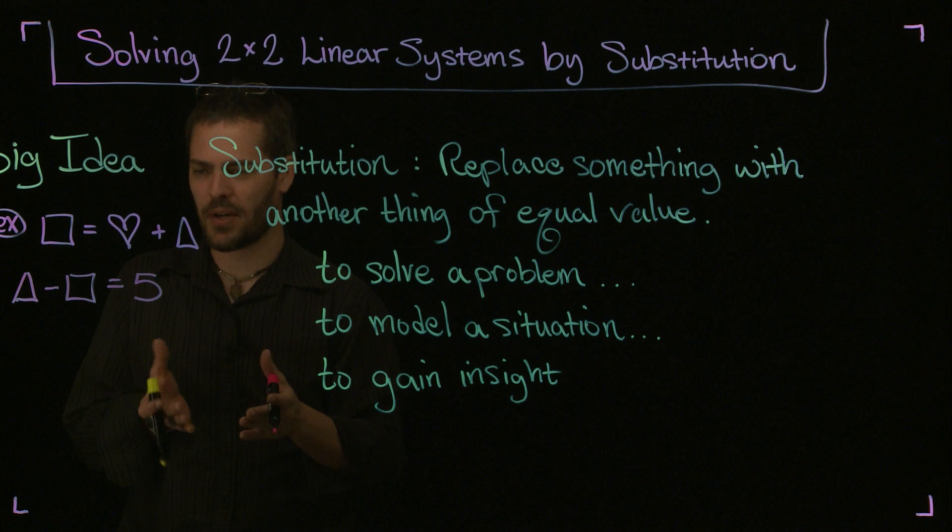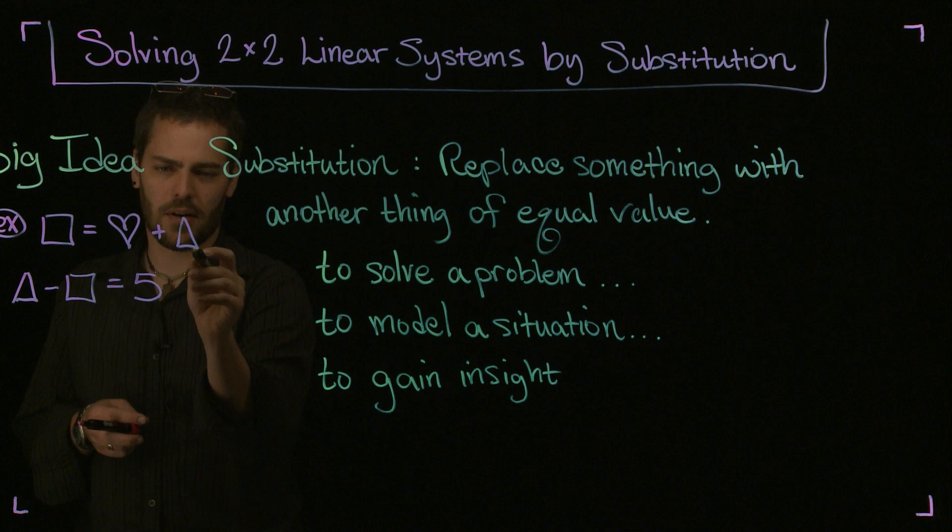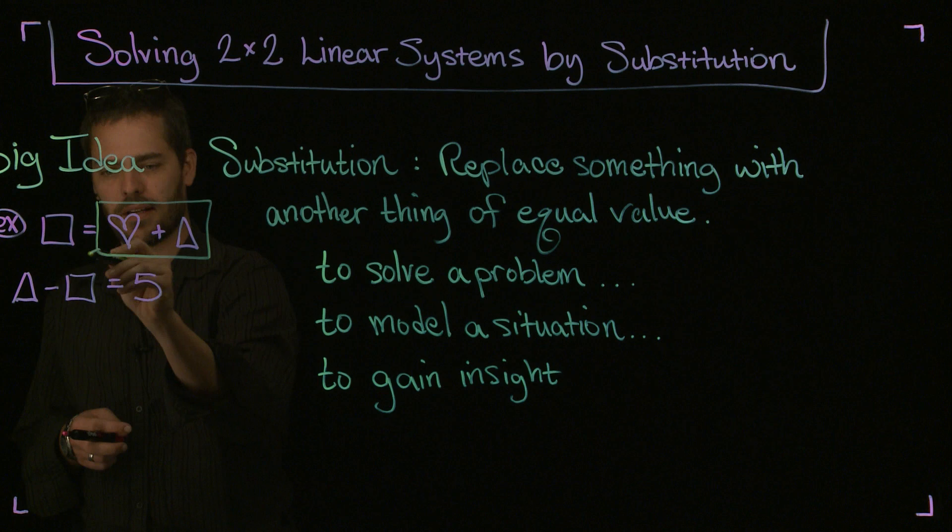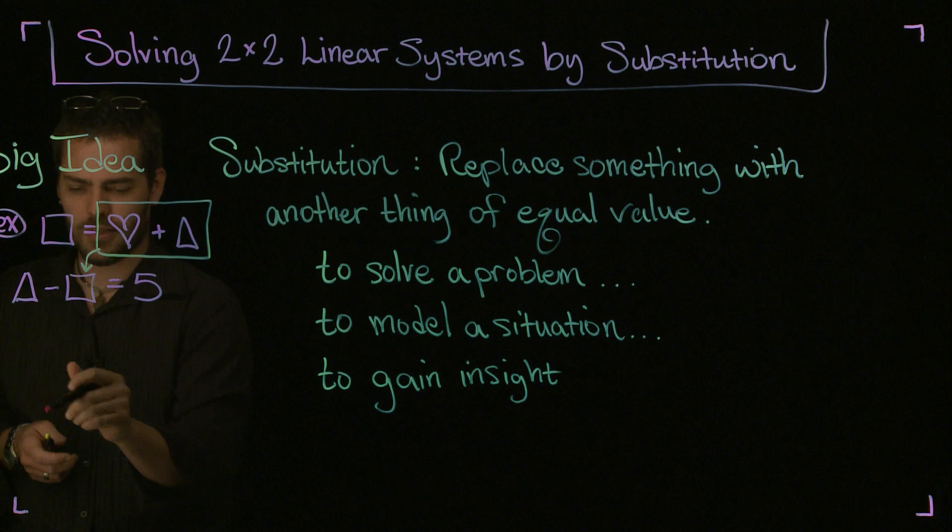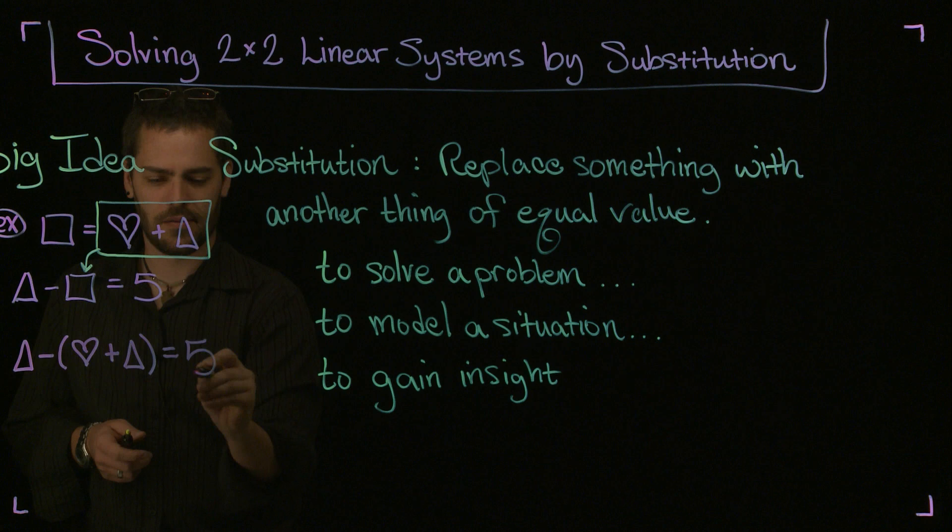Now, this doesn't really mean anything, but I just want to point out the idea of substitution. One thing I could do is substitute something with something else of equal value. Notice that the square is equal to the heart plus the triangle, which means in the other equation right below it, I can replace the square with something of equal value. I can substitute this right there where I see the square. And if I were to do that, then this second equation becomes triangle minus, I'll put a set of parenthesis, heart plus triangle equals 5. So notice the substitution that I did there.